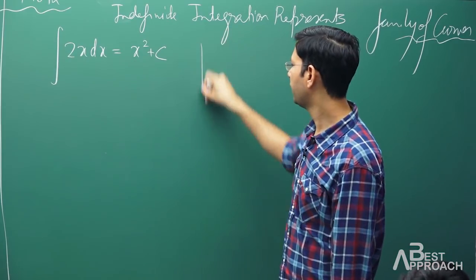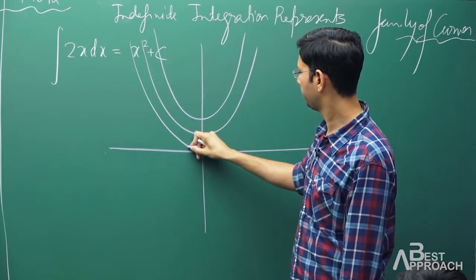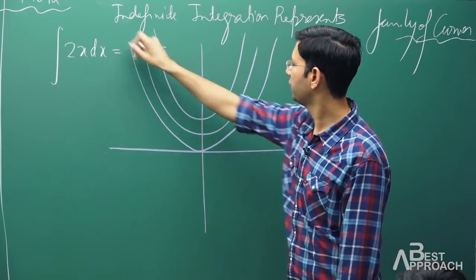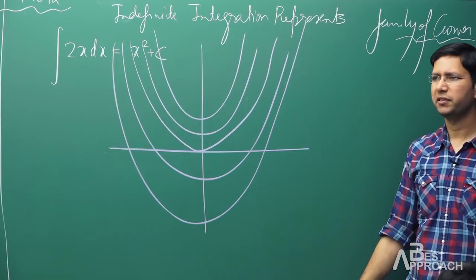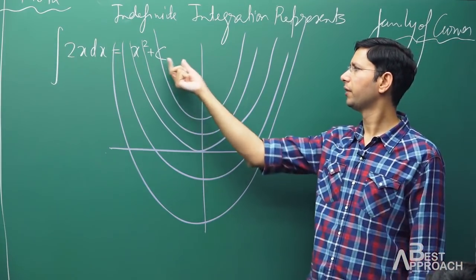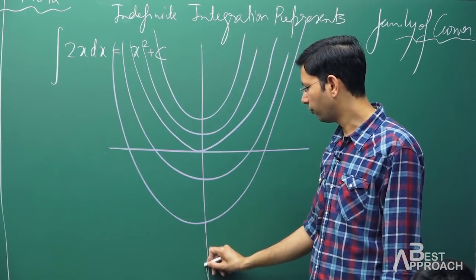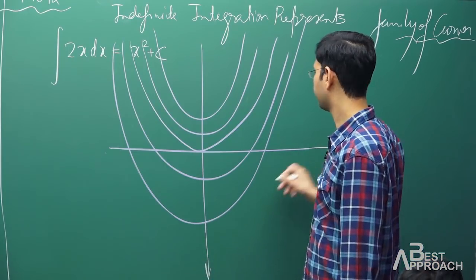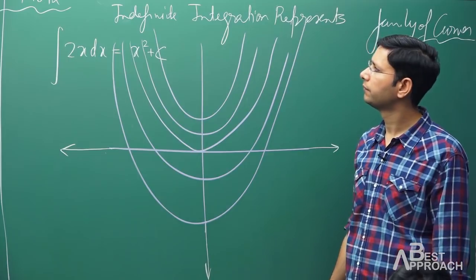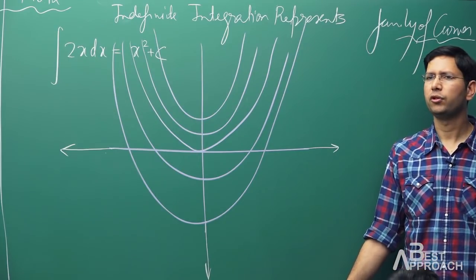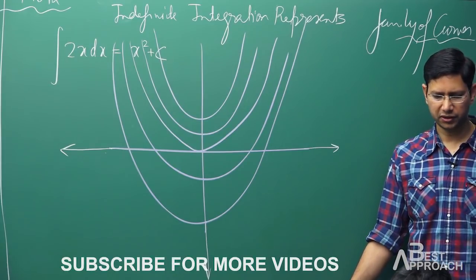The family members differ by c, giving curves like x² + c. This is a parabola and an even function. Depending upon the value of c, this parabola will shift, but it will always be symmetric about the y-axis. The integration of 2x is x² + c — I hope there is no doubt about that.